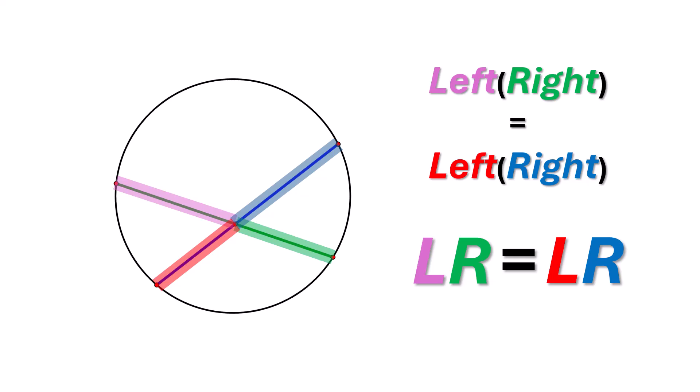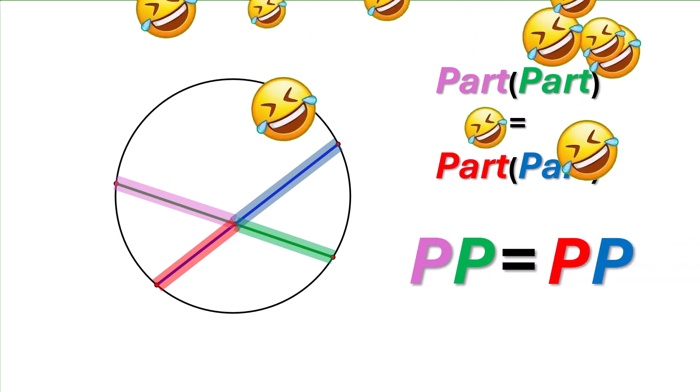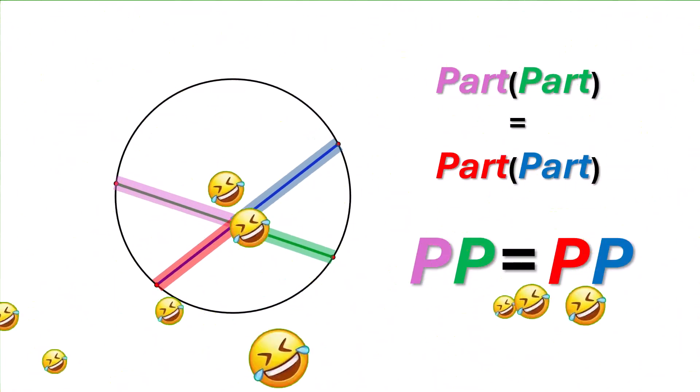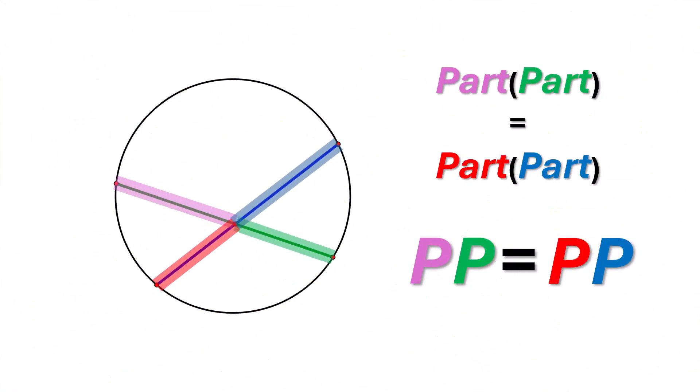But there's a funner way of doing it. And that is just saying part times part equals part times part. That may not seem like it's very intellectually a good way to look at it, but wait, it gets worse. In class, I would say it's PP equals PP. And everybody would laugh right now. So anyway, it was ow-ow and PP. And that's how I taught high school geometry.